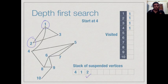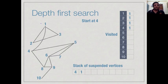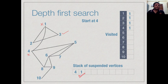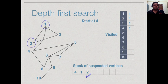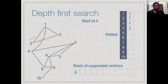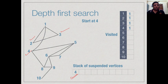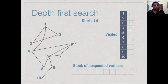When we come to 3, it has 2 neighbors, 1 and 2, but both are already visited so there is nothing to be done. We go back to the last suspended vertex, namely 2, and explore its neighbors. We had already processed 3 and 4 is also already visited, so we are done with 2. We restore 1 from the stack and find that 2, 3, and 4 are all already marked, so 1 is done. We go back to 4 and find there are still neighbors 5, 6 and 8 to explore.